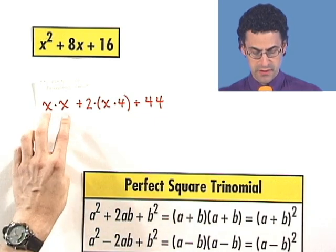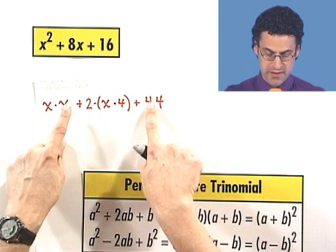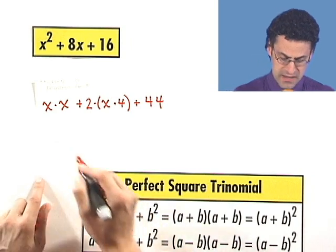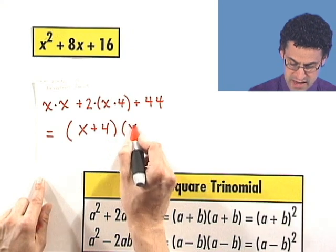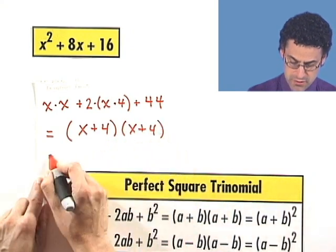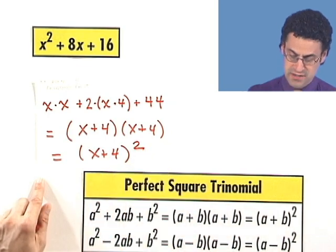And so you can see the perfect square, the perfect square, and 2 times the product of the numbers themselves. And so immediately I see this equals x plus 4 times x plus 4 or alternatively and equivalently x plus 4 quantity squared.